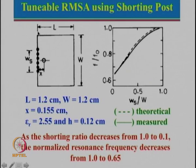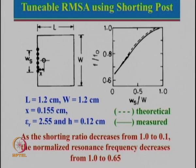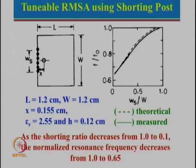Once shorting posts are fixed, you cannot tune further. An alternative is to use PIN diodes instead. A PIN diode has a P-I-N junction, and PIN diodes are used at microwave frequencies. When forward biased, they act as a short circuit; when reverse biased, they act as an open circuit. By placing PIN diodes at multiple positions and switching them on or off, you can vary the effective shorting position and thereby tune the frequency.